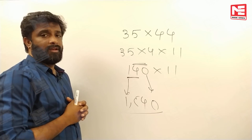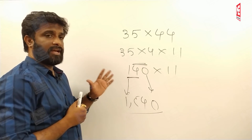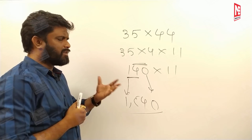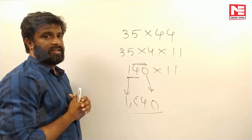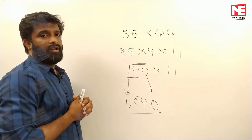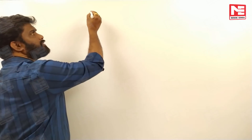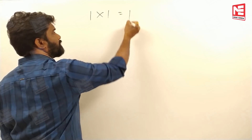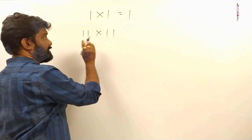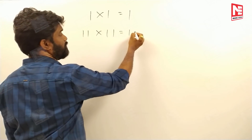That covers the full concept of multiplying any natural number with 11 and handling decimals. Now there is one more concept based on all-ones numbers. For example: 1 into 1 gives 1; 11 into 11 gives 121; 111 into 111 — this takes some time, but we can do it very easily.